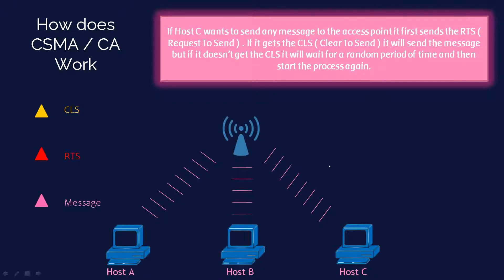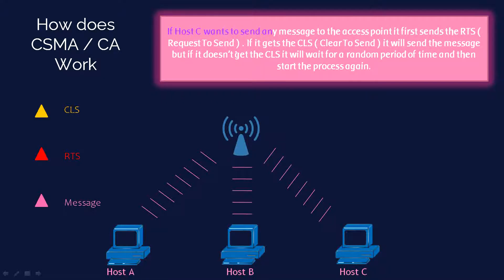Here I have an example network with three PCs and an access point — host A, host B, and host C — all connected to the access point. If host C wants to send any message to the access point, it follows the CSMA/CA process.